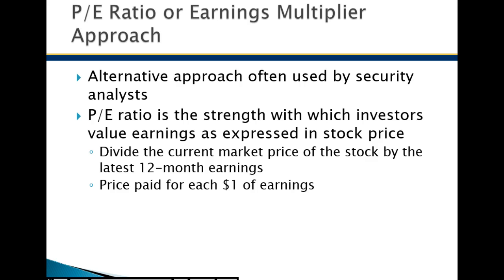The PE ratio is the strength with which investors place value on a stock's earnings — simply the price of the stock divided by the earnings per share. For example, a $25 stock with $5 earnings per share has a PE of 5, which is very low since the market average is usually around 15. A PE of 5 could be a real potential good value to buy — like finding shoes on a 50% off sale when you were prepared to pay full price.